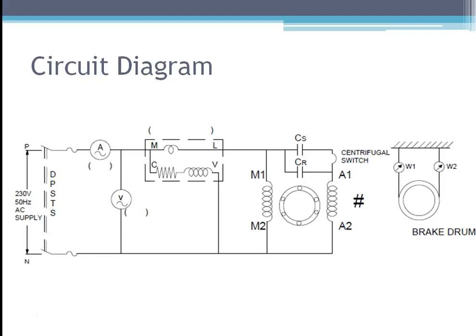This is the circuit diagram for conducting a load test on a single-phase induction motor. The motor has a squirrel cage rotor and two windings: M1 and M2 as the main winding, and A1 and A2 as the auxiliary winding.